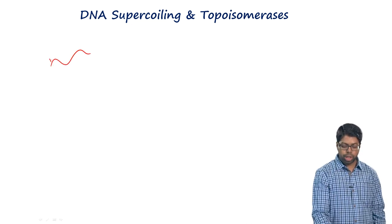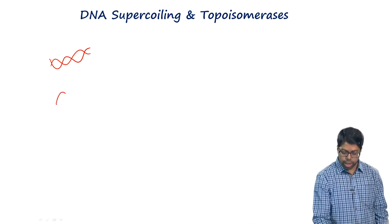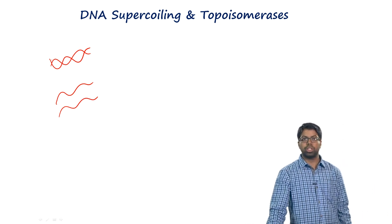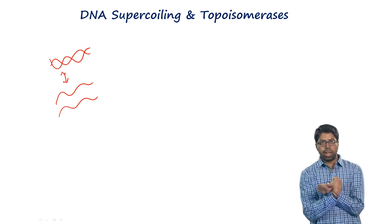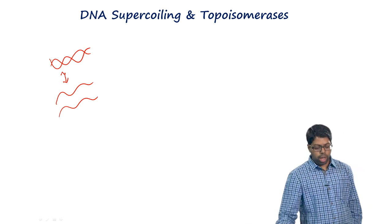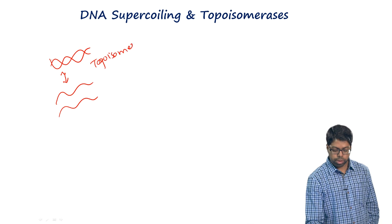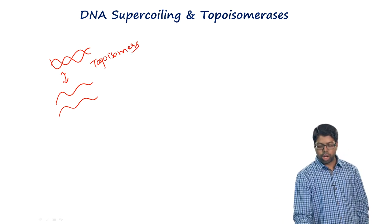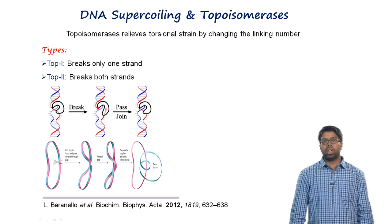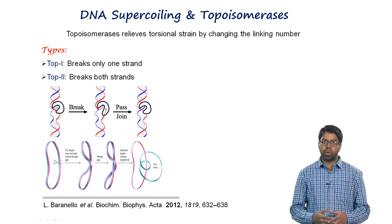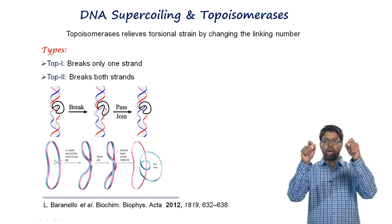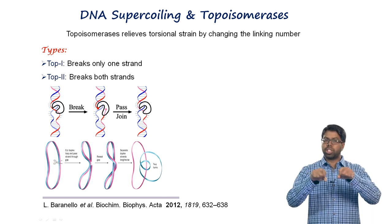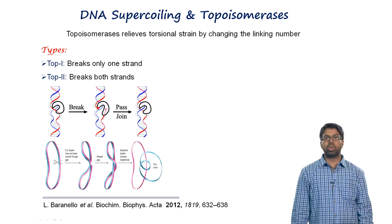DNA strands that are wrapped around each other versus those separated are chemically identical but topologically different — they are called topoisomers. Topoisomerases are enzymes that perform cut-and-paste operations: they cut one or both strands, pass one end over the other side, and rejoin them. This process continues until both strands are disentangled.